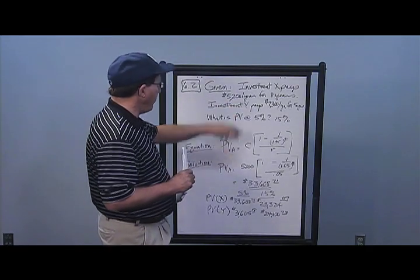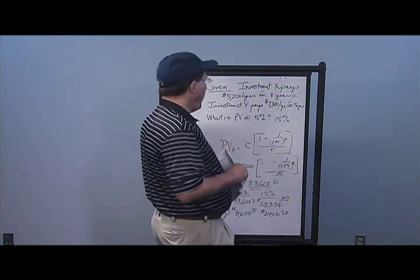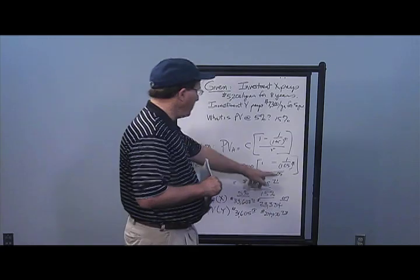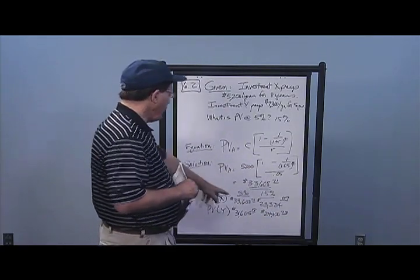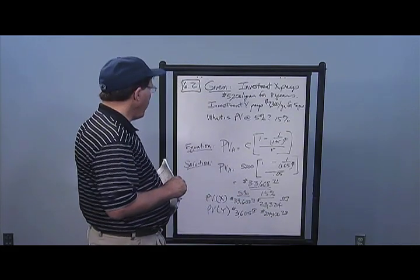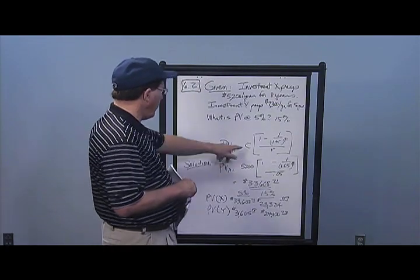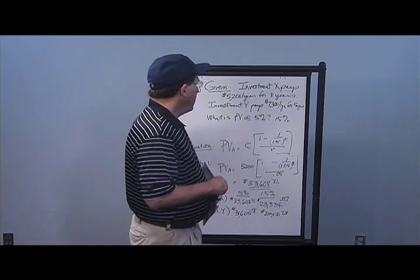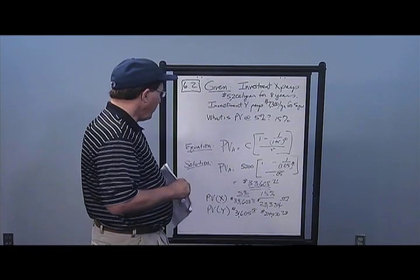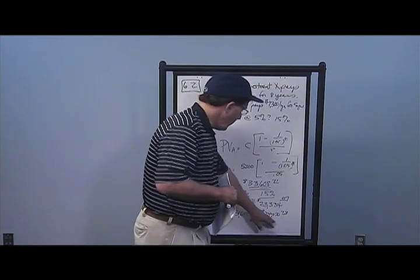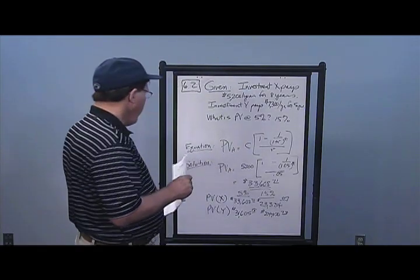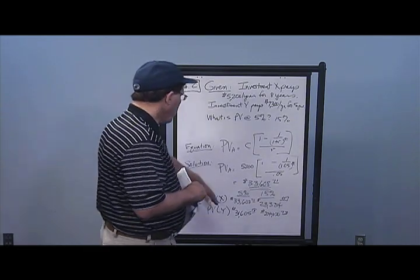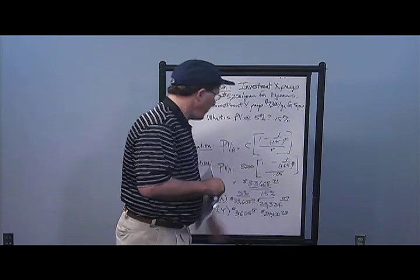For the first case, $5,200 is C, 0.05 is the rate, eight years. I get a present value of $33,608.71. At 15%, that goes down to $23,334.07. For Investment Y, $7,300 a year for five years: I get $31,605.18 at 5%, and $24,470.73 at 15%. You can see Investment X is better at 5%, but in choosing between investments, at 5% take Investment X and at 15% take Investment Y.